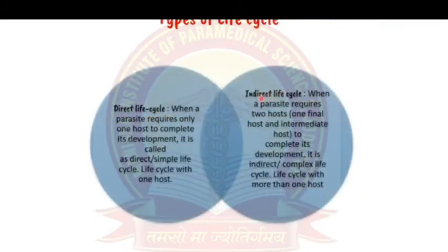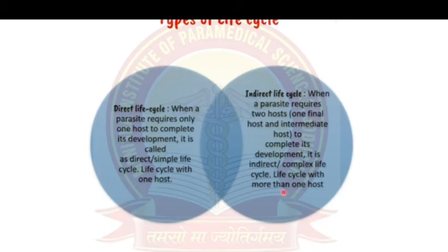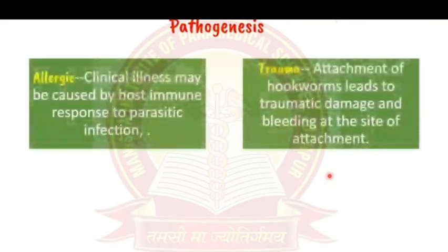Types of life cycles: in a direct (simple) life cycle, only one host is required for the parasite's complete development. In an indirect (complex) life cycle, more than one host is required — one definitive host and one intermediate host.